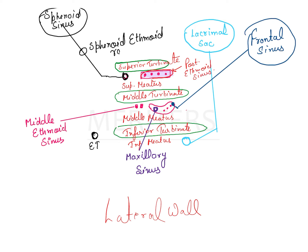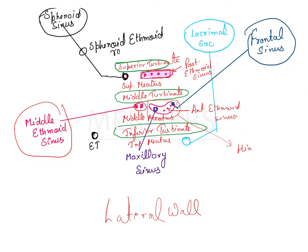Then you have the anterior ethmoid sinus and the middle ethmoid sinus openings in the middle meatus — specifically in the anterior part of the hiatus semilunaris. This semilunar area is the hiatus semilunaris, and its anterior part houses the anterior ethmoid sinus, while the anterior-most part houses the opening from the frontal sinus.